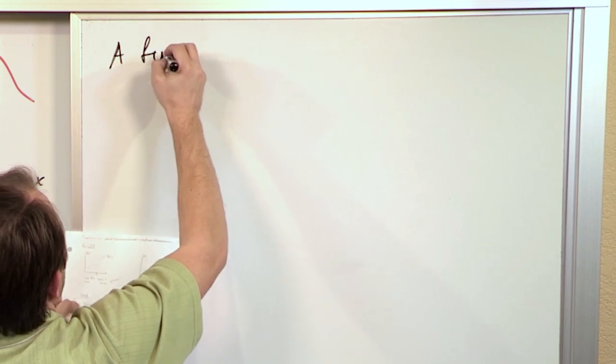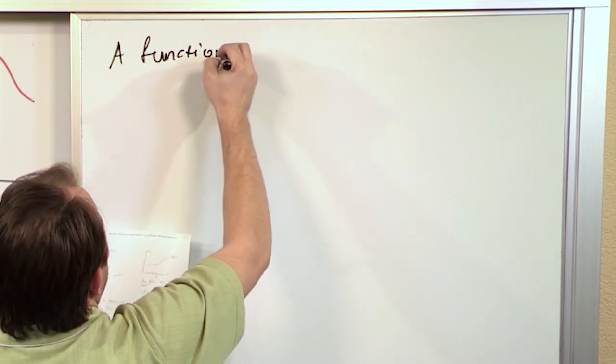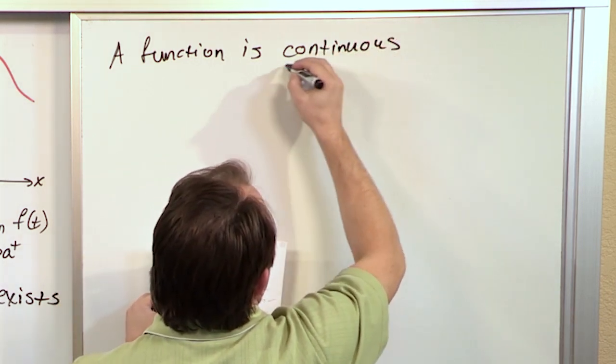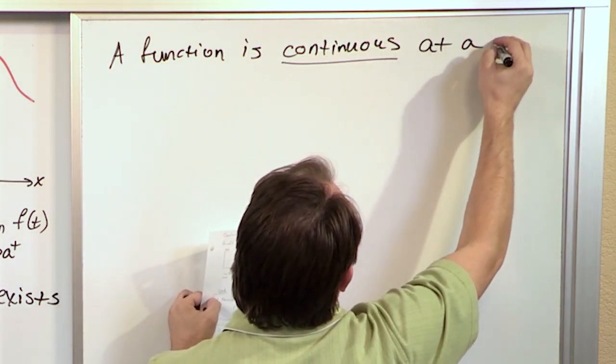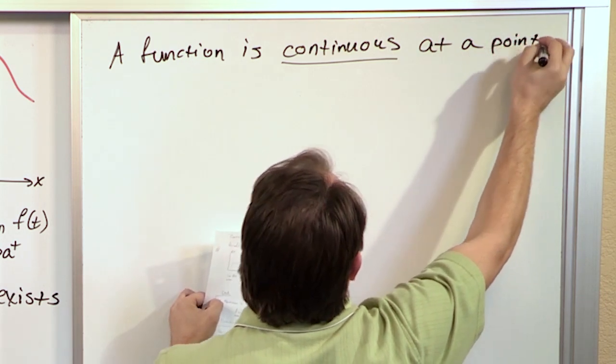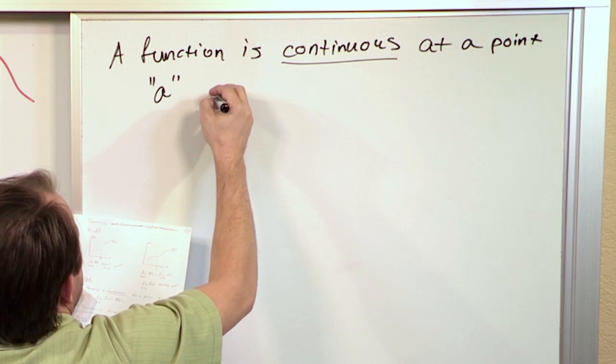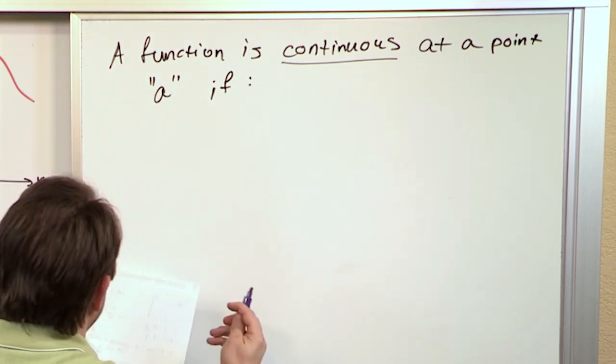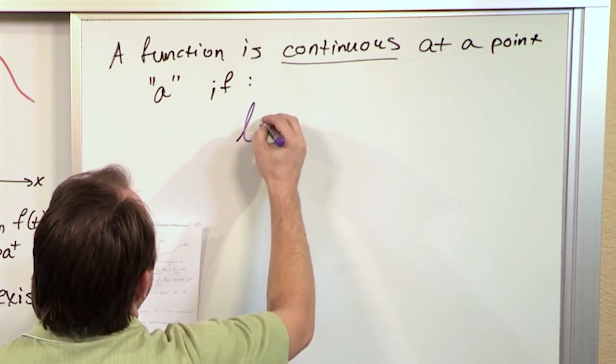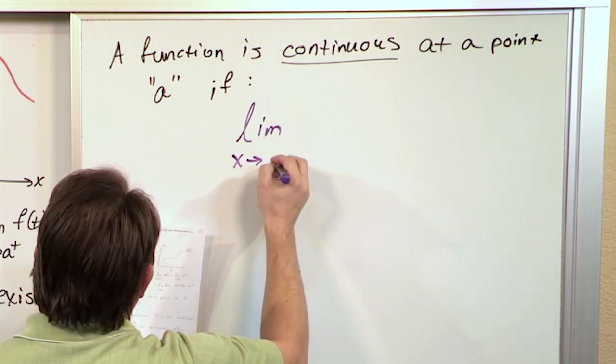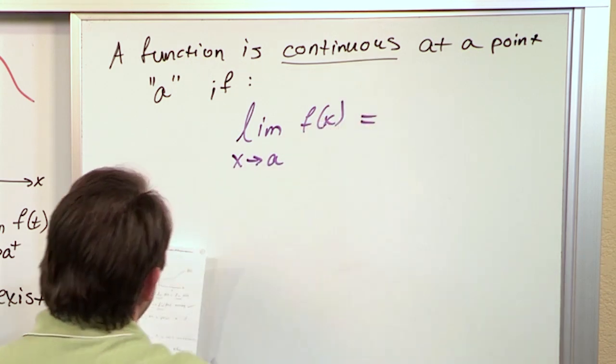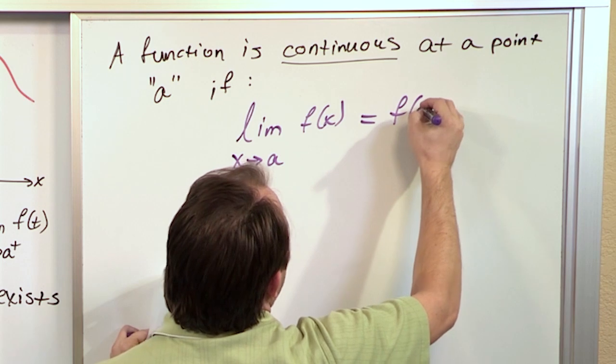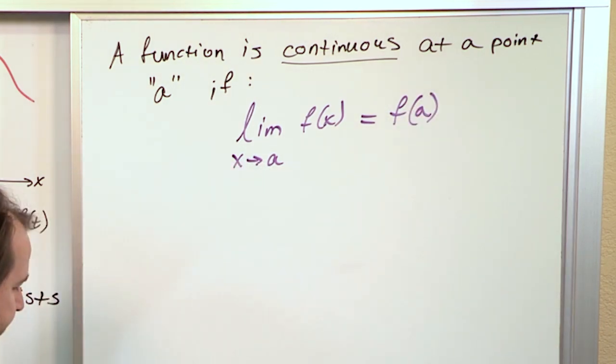So a definition that you'll find in your book is a function is continuous at a point. The point we're always talking about is the point A if, and I know you can guess the punchline because we've drawn it on the board, if the limit as x approaches a of f of x. Get ready for the punchline, is equal to the function evaluated at a.